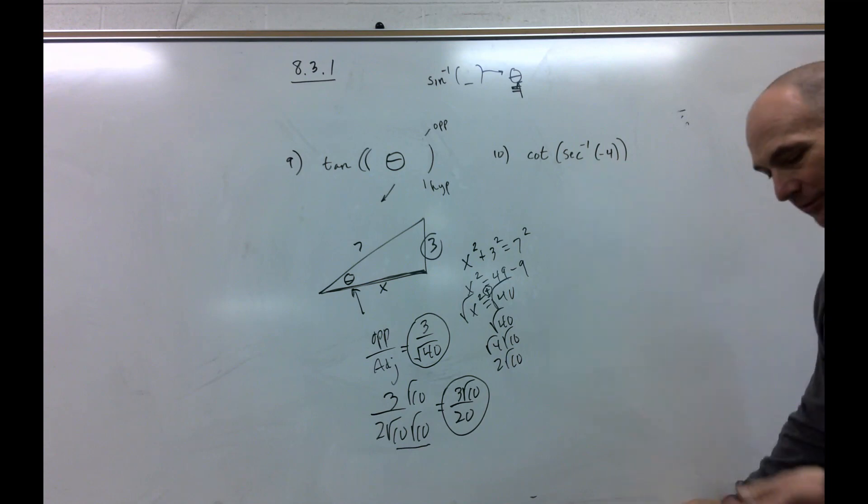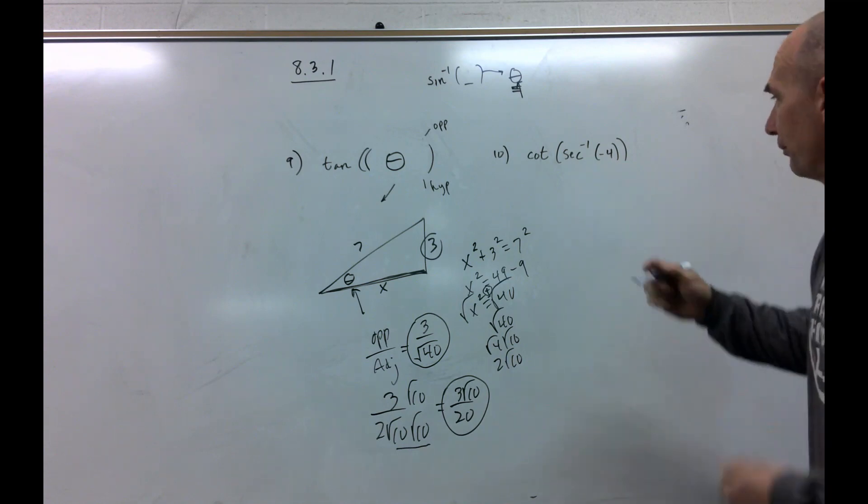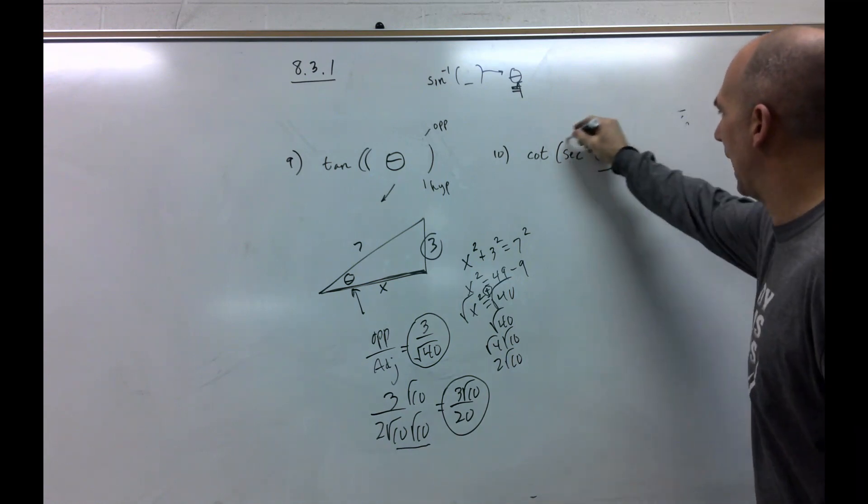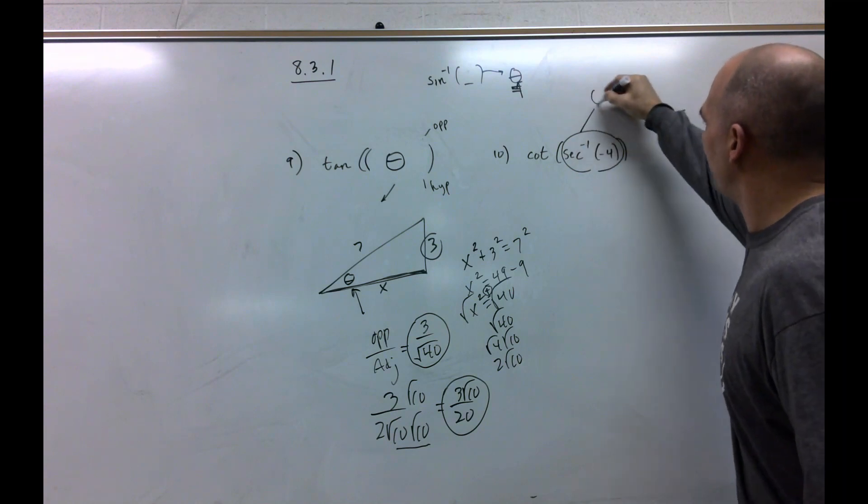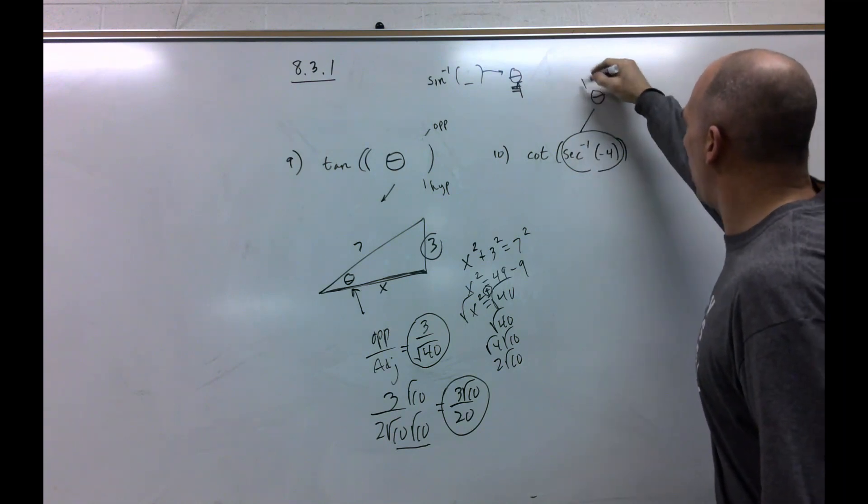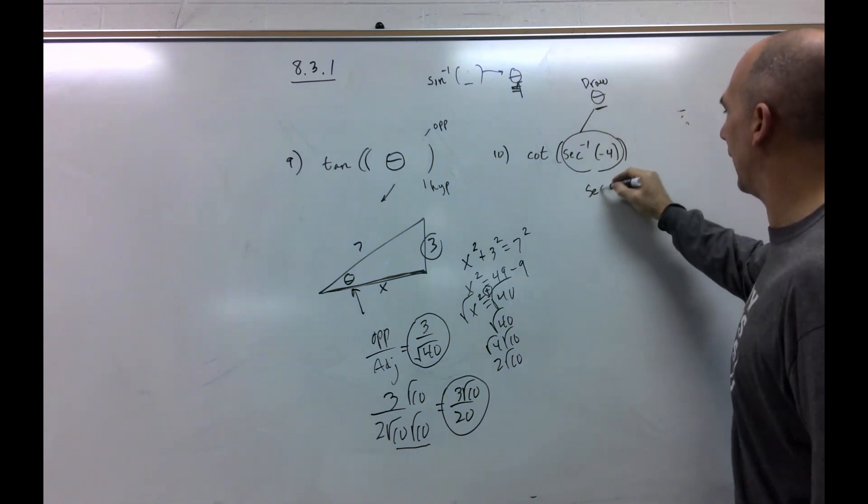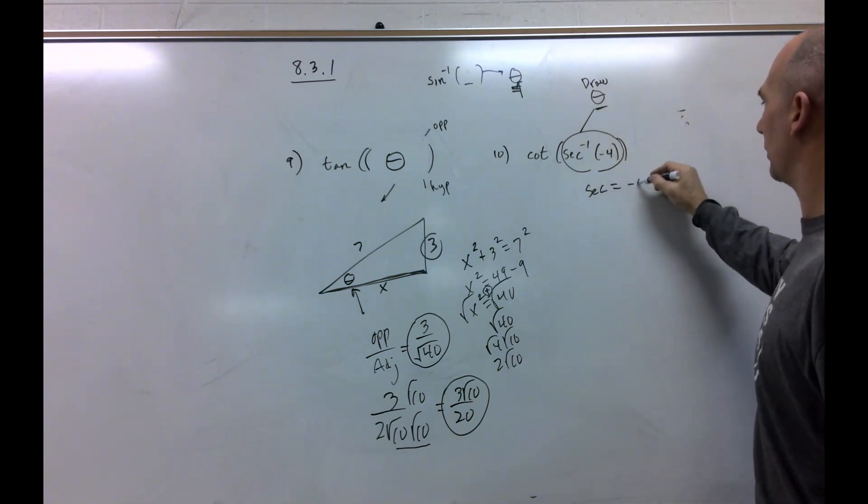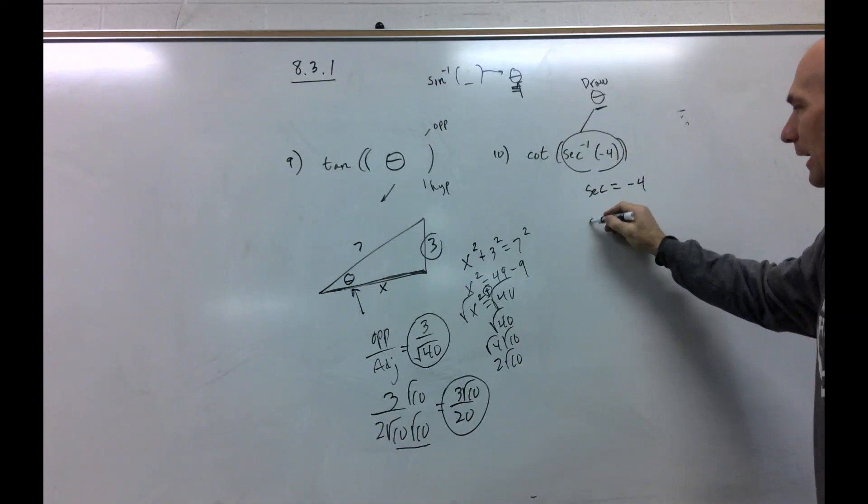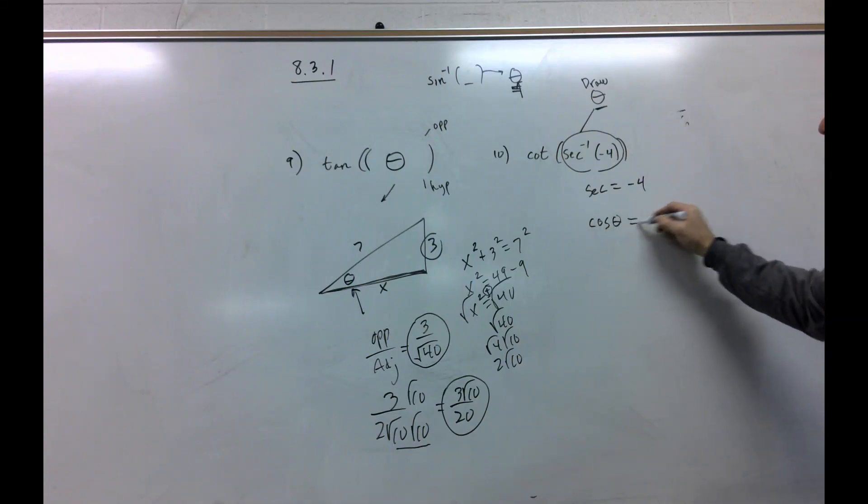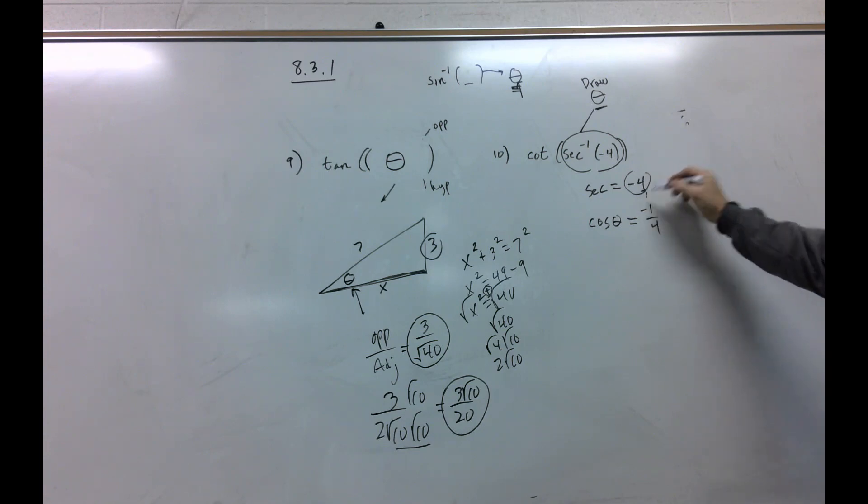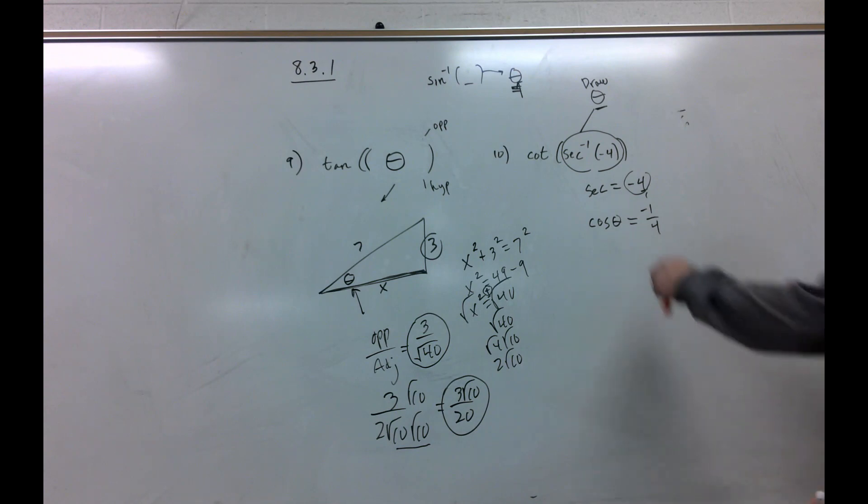Last problem of this lesson. I know this lesson's long. So, this problem is actually saying find theta or draw theta where secant equals negative 4. Well, using our noggins, that means cosine of our theta has to equal this thing's flip, which would be negative 1 over 4 because there's an invisible 1 there. Why did I bring the negative 1 up? Because my hypotenuse has to be positive.